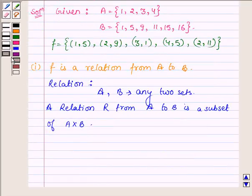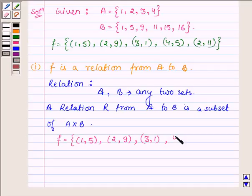And here we see that F which is a set having ordered pairs (1,5), (2,9), (3,1), (4,5), (2,11)